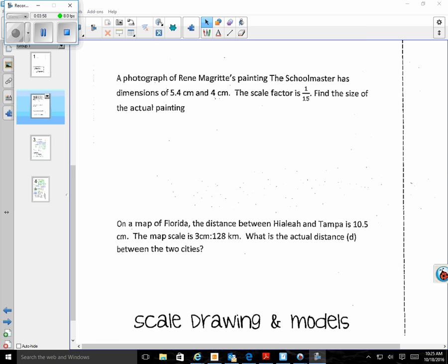Next example: A photograph of Rene Magritte's painting The Schoolmaster has dimensions of 5.4 centimeters and 4 centimeters. The scale factor is 1 to 15. Find the size of the actual painting.